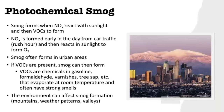NOx tends to be formed early in the day, often due to car traffic — just imagine rush hour at seven in the morning with everyone driving to work on the highway. That's a lot of NOx compounds, mainly nitrogen dioxide, coming out of the tailpipes of vehicles. This then reacts with sunlight, creating ozone. Smog tends to form more in urban areas because a lot of cars put out those chemicals, and if VOCs are present, smog will then form.